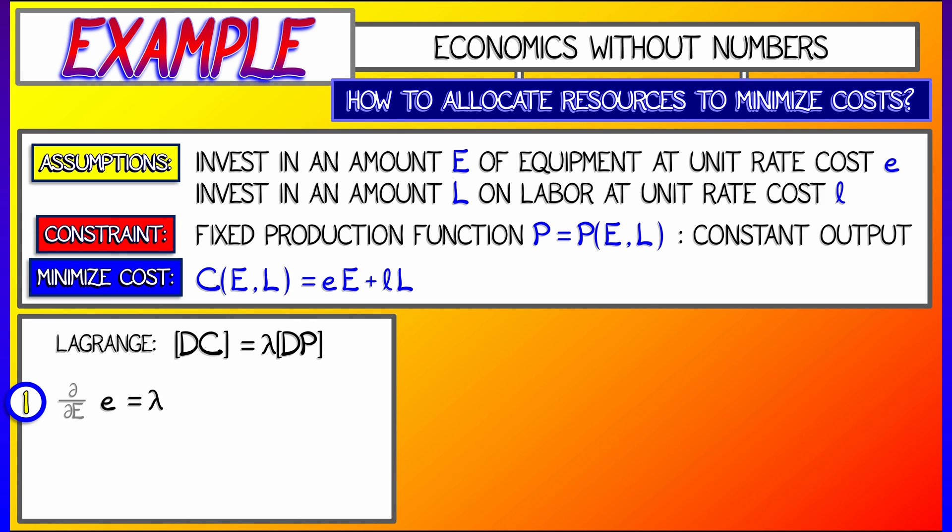On the right-hand side, lambda times what? What is that? Oh, it's just the partial of P with respect to big E. Even though I don't know what that function is, I can write that down. That's a rate of change, a partial derivative.